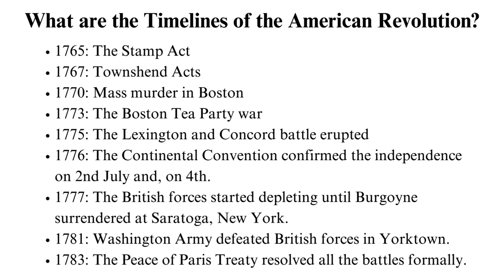The Battle of Saratoga led to a significant victory for the Continental Army and became a turning point. 1781: Washington's Army defeated British forces in Yorktown. The Continental Army combined troops that overwhelmed their enemies until General Cornwallis surrendered his army of 7,000 men in October 1781. 1783: the Peace of Paris Treaty resolved all the battles formally. The British recognised the United States' independence with the Mississippi River's boundaries.